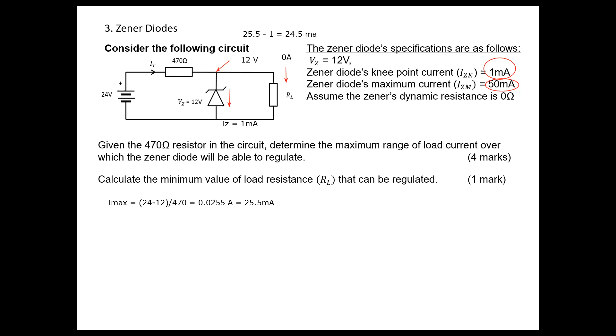Now we need to find the minimum value of load resistance RL. We have maximum current to the load when we have minimum resistor. At this minimum resistance, current through the load is 24.5 milliamperes. The voltage will be 12 volts. If you apply Ohm's law, you can calculate the minimum value for resistance.